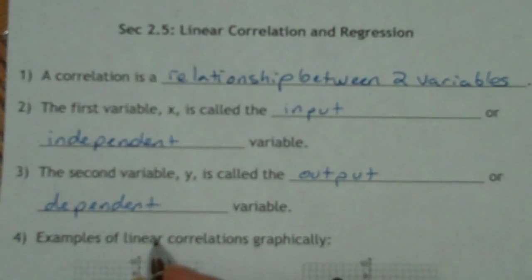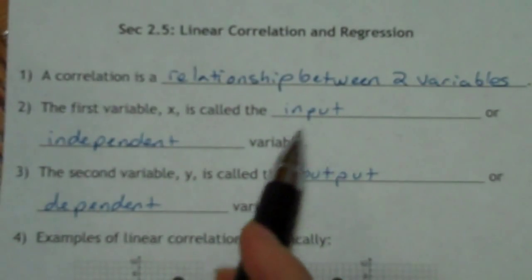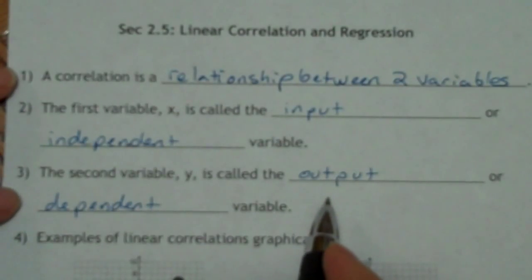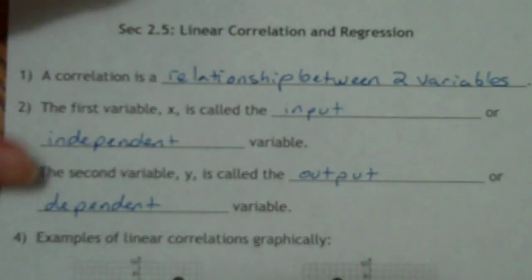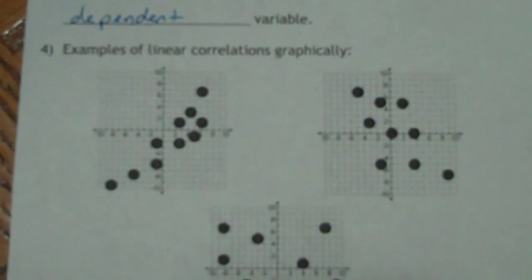So basically the way that we're going to think about this, even though they don't cause each other, we're going to think about if we change one of the variables, we're going to see if it causes a change in the other variable. So it may or it may not. And then let's look at some examples of correlations on graphs.